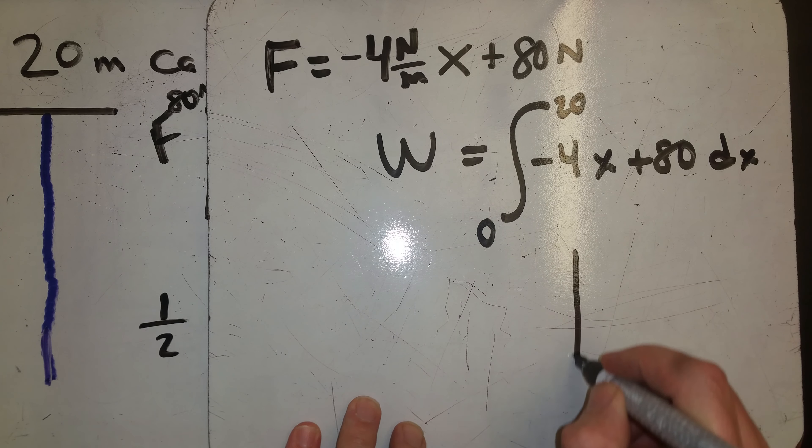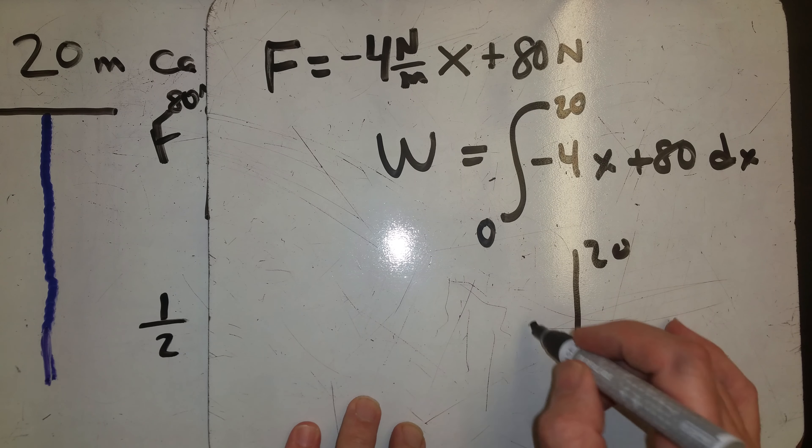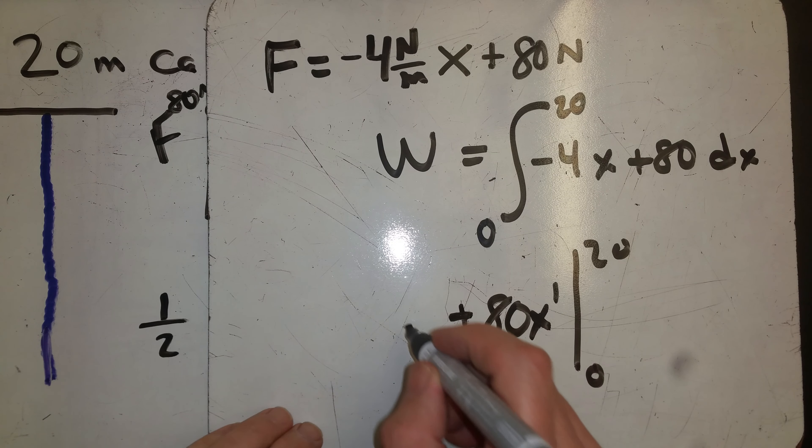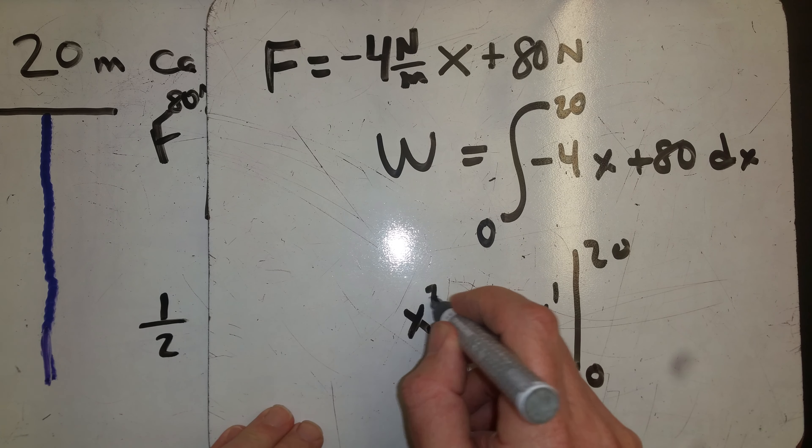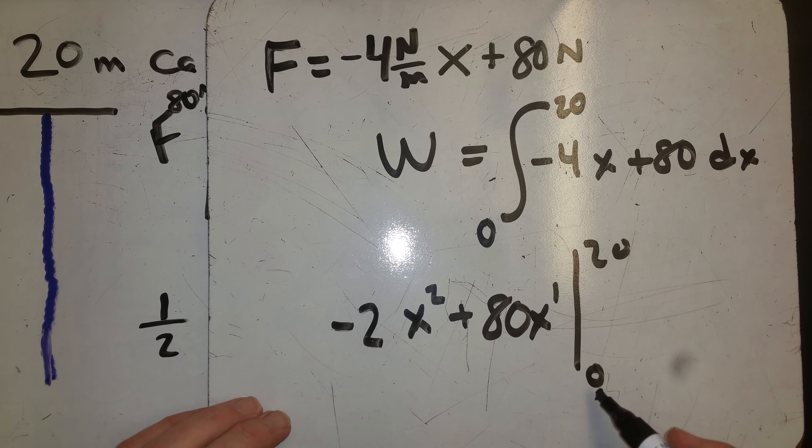So now we want to turn that into an integral from 0 to 20. 80 is x to the 0, so that would be x to the 1. x to the 1 goes up to x to the 2, we brought that down from a negative 2, that's going to give us our negative 4. So now the nice thing about this problem, we're going from 0 to 20.